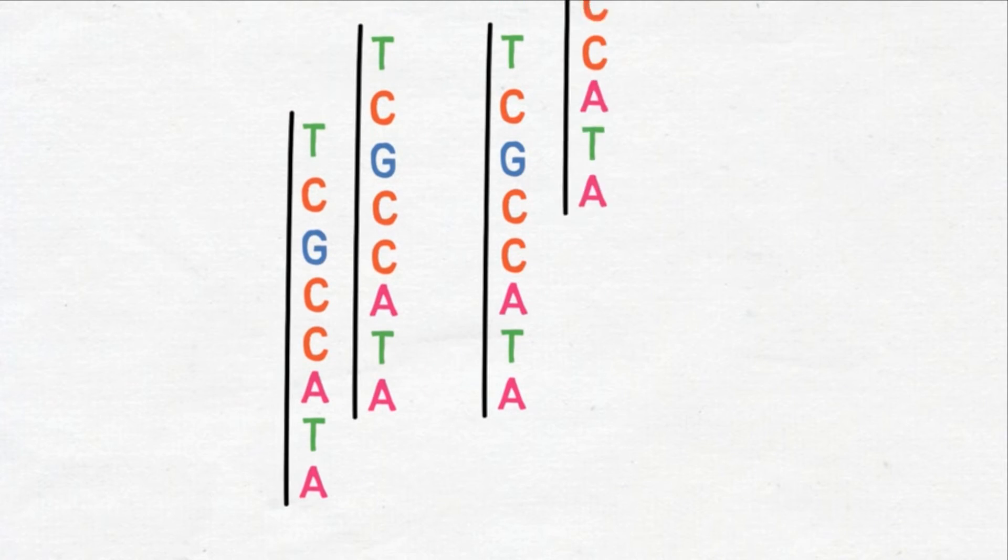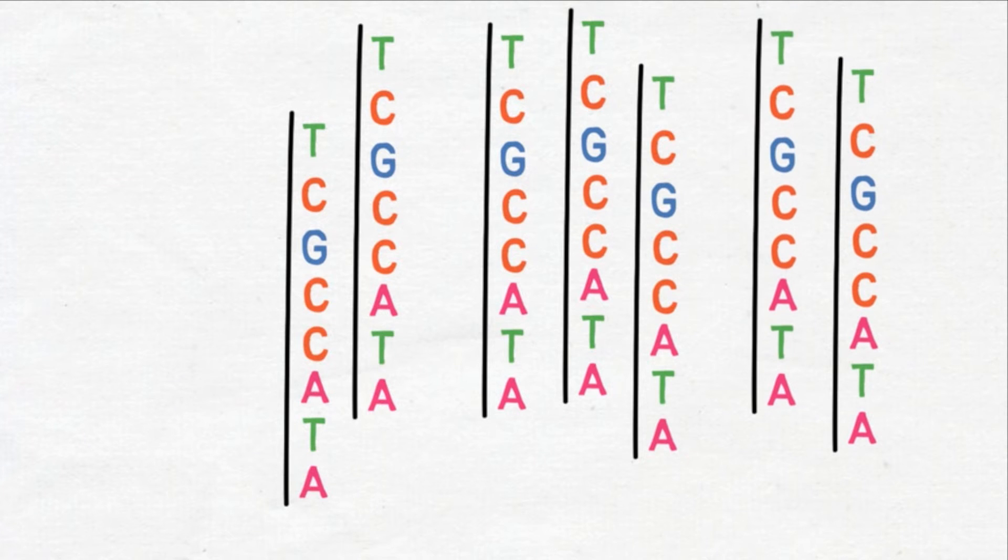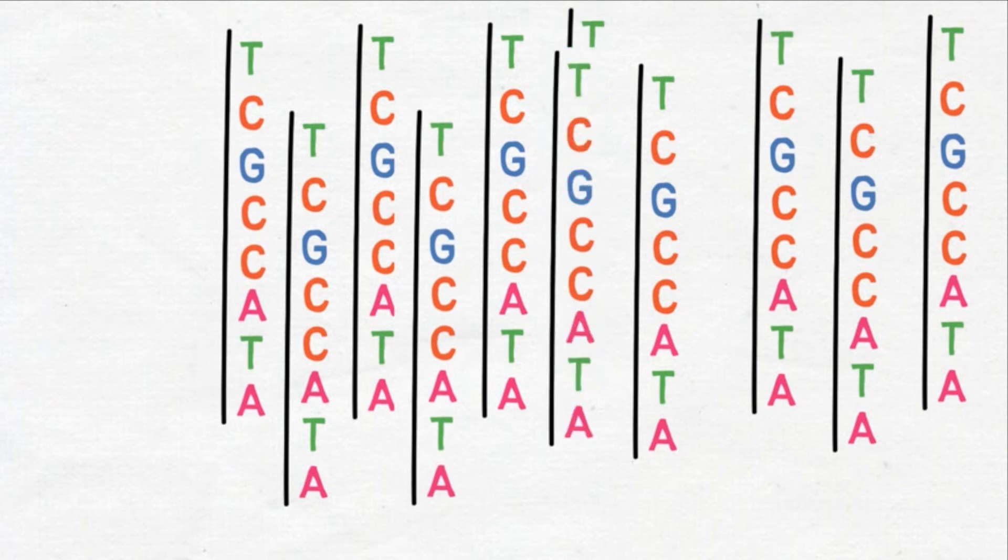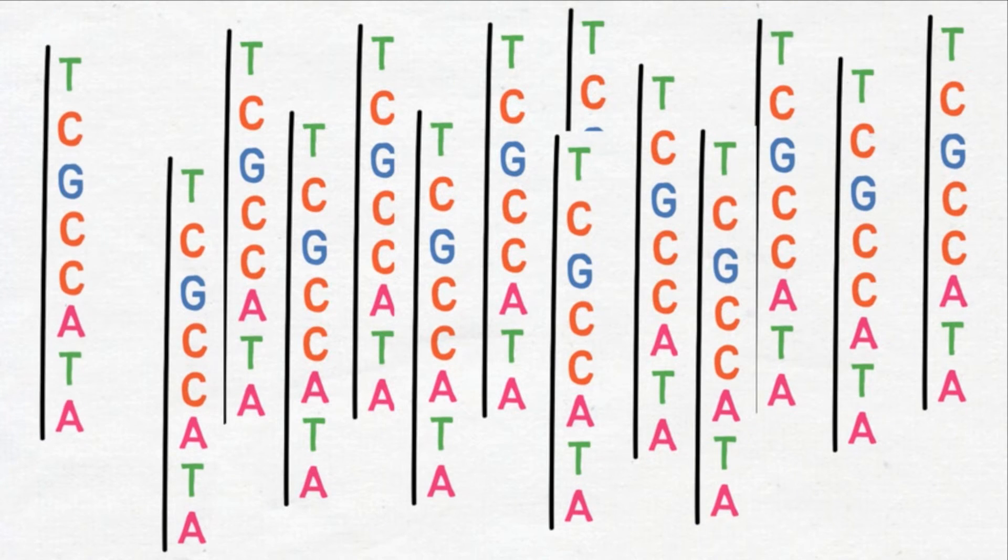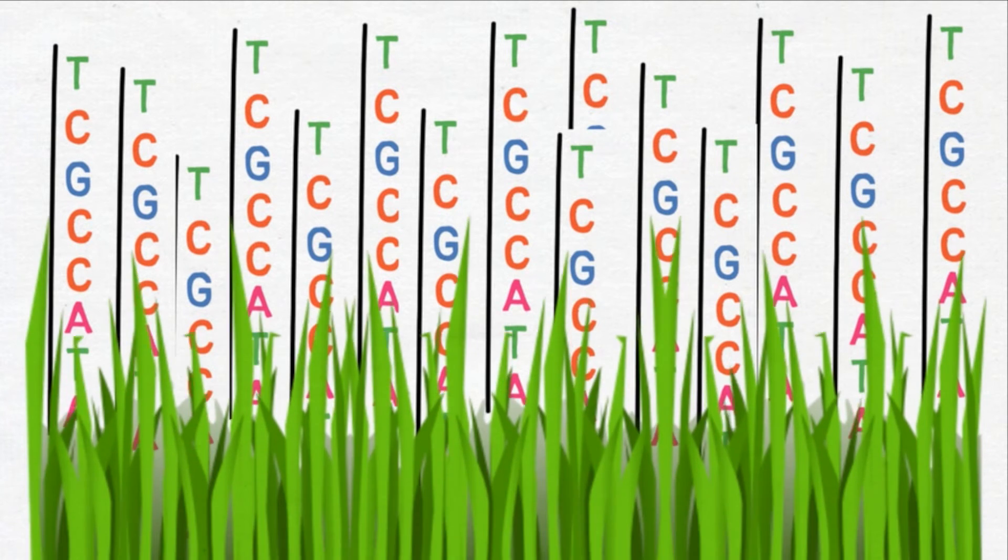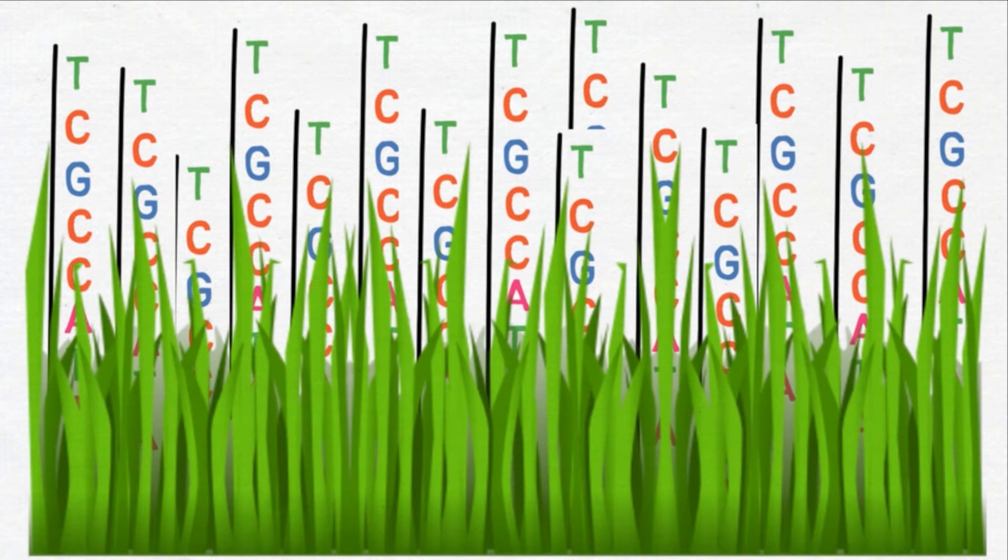Inside the flow cell, the DNA fragments attach to the glass surface upright. If you had a high-powered microscope, you might say the fragments look like blades of grass on a lawn.